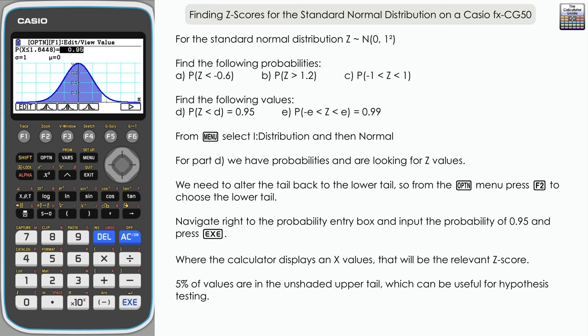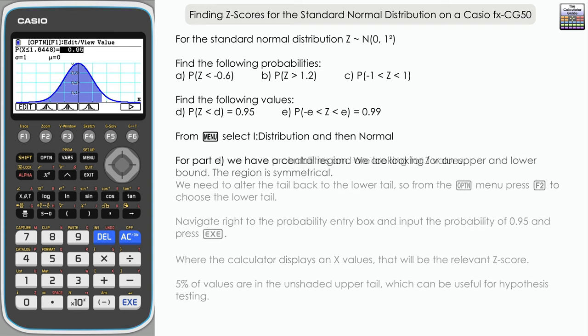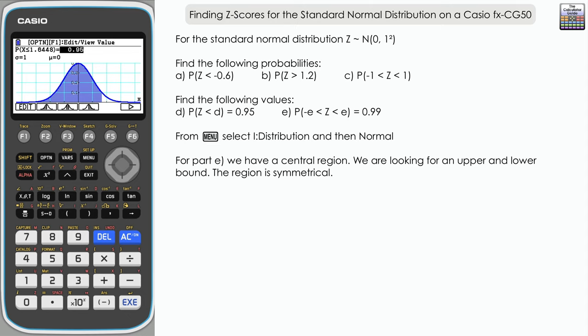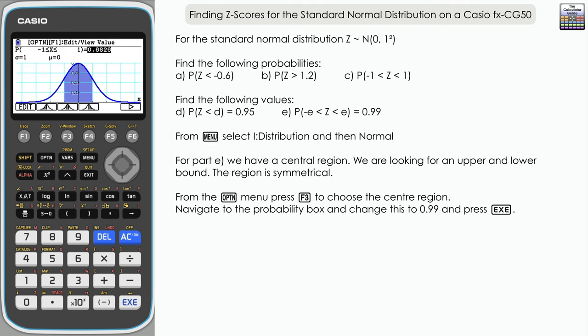Part E, then. And this time we have a central region that we need to find. We're looking for an upper and lower bound in the center where that central region is 0.99, or 99% of all the values. So we need to change to central region once again, which is F3. We will keep the X boxes blank; they will change when we change the probability. Navigate to the probability box, and we're going to alter that to 0.99 and press execute.